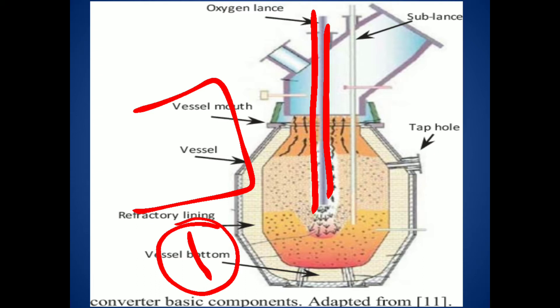Oxygen is introduced through the oxygen lance tube, also called the water-cooled tube. Along with the oxygen, lime is also sent. The oxygen enters the LD converter at a pressure of 10 bars.